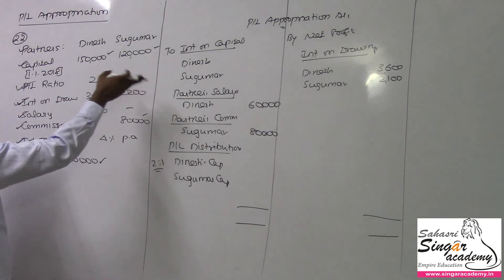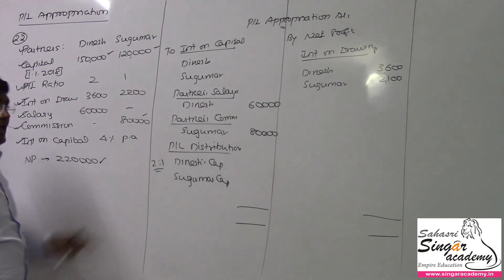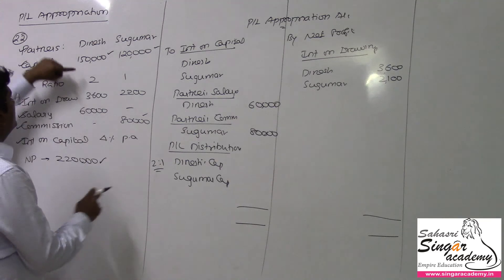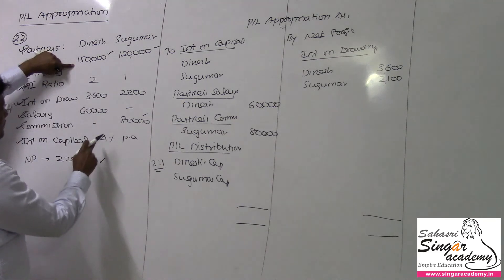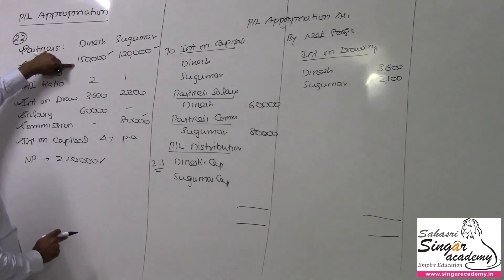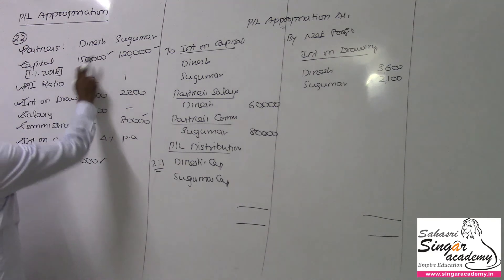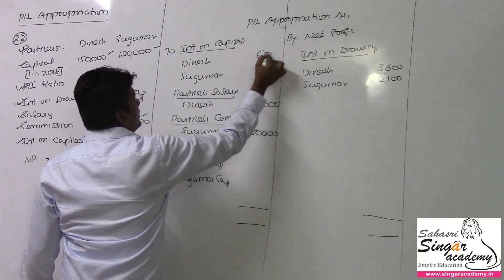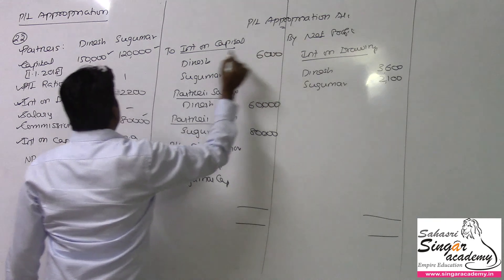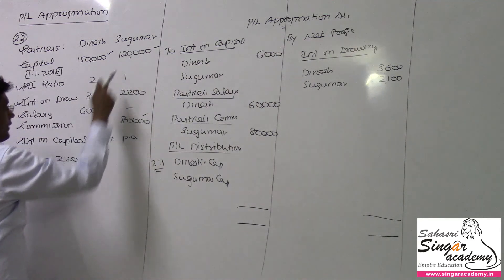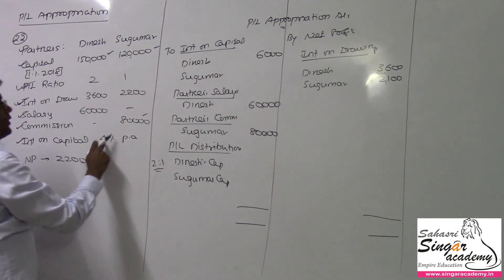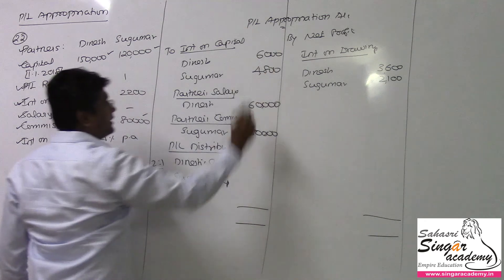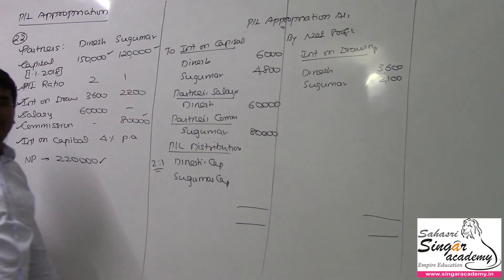Capital should not be confused with entries here. Interest on capital: Dinesh has 1 lakh 50,000 at 4%, which gives 6,000. Sugumar has 1 lakh 20,000 at 4%, which gives 4,800. So Dinesh's interest on capital is 6,000 and Sugumar's is 4,800.